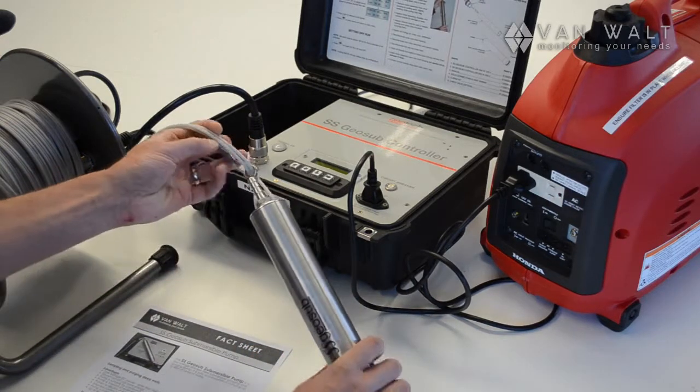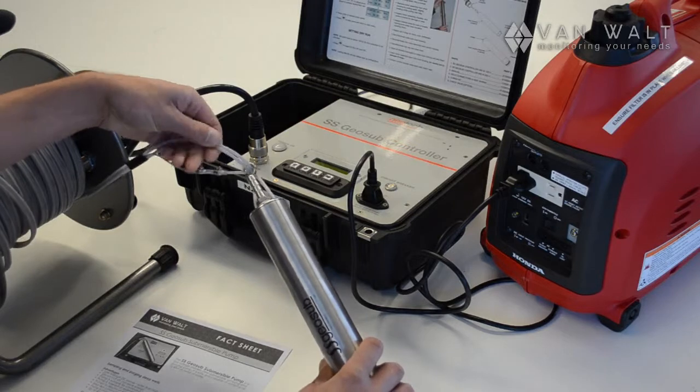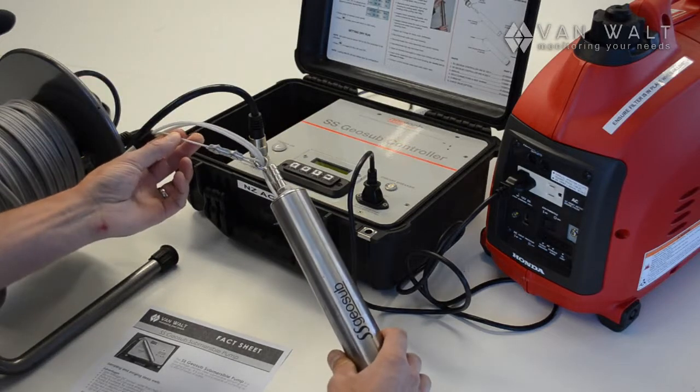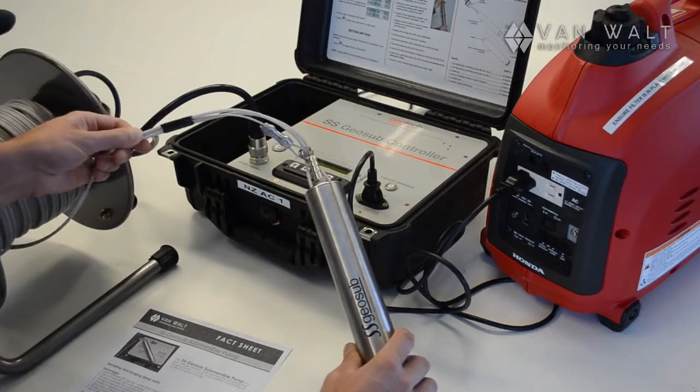You can see here we've got, so this is a 45 meter reel, we've got the two power cords and then a suspension cable here and this is all neatly bundled up in a cable so we don't get anything at a twist.